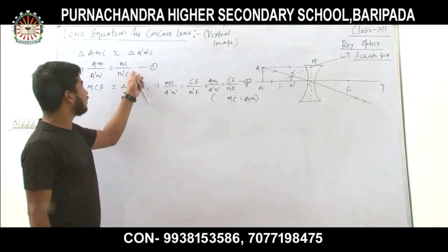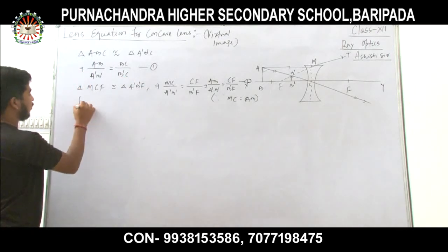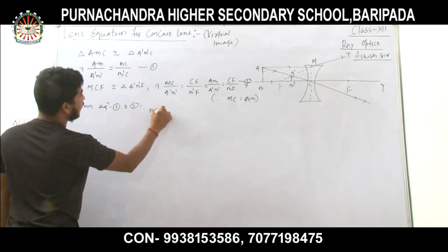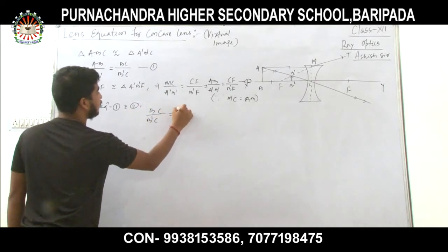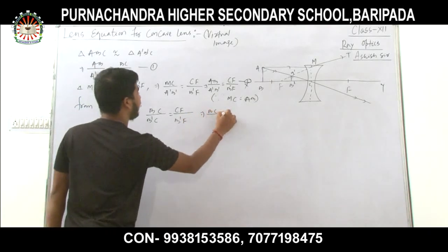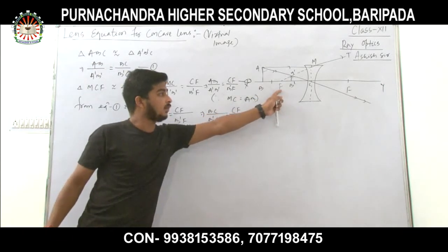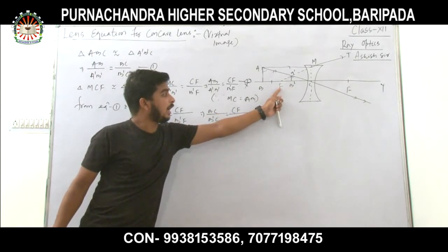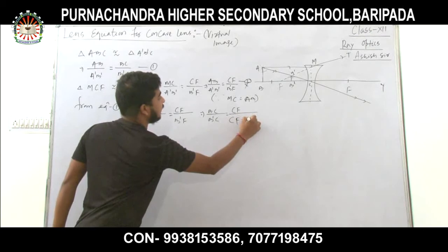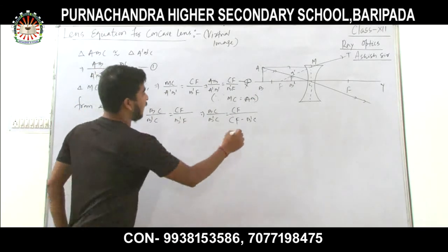Looking at Equations 1 and 2, the left-hand sides are equal, so the right-hand sides must also be equal: BC / B'C = CF / B'F. Now B'F can be written as CF minus CB'. Mark this as Equation 3.